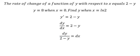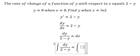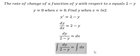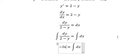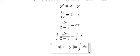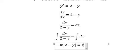Next, we integrate both sides. The integration of this gives us negative ln of the absolute value of 2 minus y. The integration of dx is x, and I'll add the constant c.